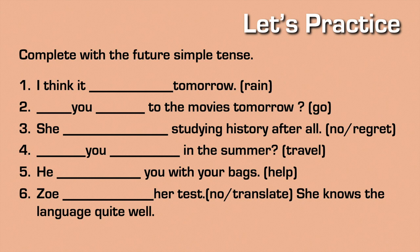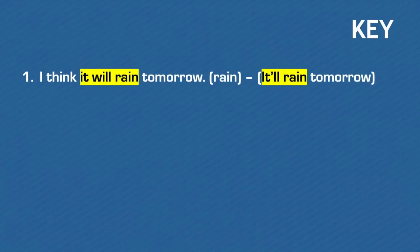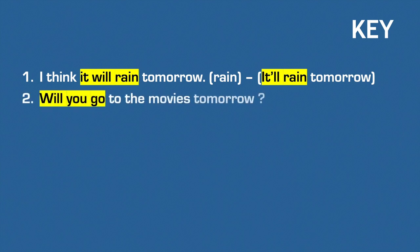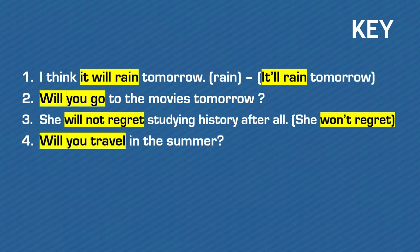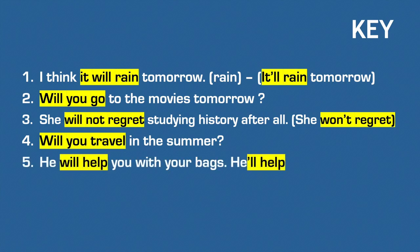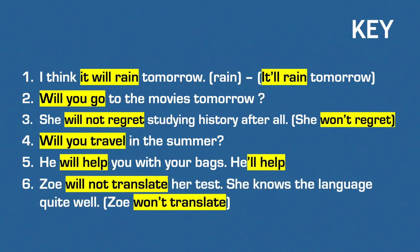So now that you're ready, let's look at the key. I think it will rain tomorrow — or I think it'll rain tomorrow. Will you go to the movies tomorrow? She won't regret, or she will not regret, studying history after all. Will you travel in the summer? He will help you with your bags — he'll help you. Zoe will not translate her test; she knows the language quite well — Zoe won't translate. When you write, use the whole word; when you speak, use the contracted form.